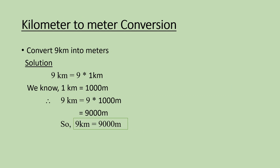Now in this slide, we will see how to convert kilometers to meters. Suppose you are given a distance of nine kilometers and you are told to convert it into meters. I know that nine kilometers can be written as nine into one kilometer. I also know one kilometer is equal to one thousand meters. So nine kilometers will be nine into one thousand meters, which equals nine thousand meters. Therefore, nine kilometers is equal to nine thousand meters.